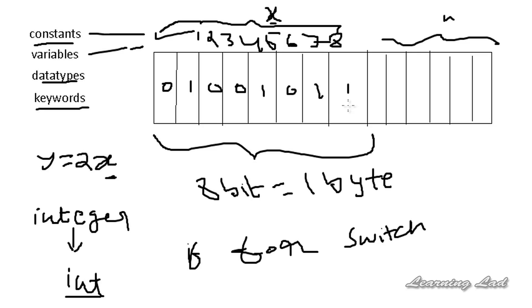To recap: a constant is an entity which doesn't change — we have integer, floating point, character, and string constants. A variable is a name given to a memory location in order to access it easily. A data type indicates what type of data is stored in a variable. And keywords are words whose meaning is already defined to the compiler, and we cannot use them as variable names.